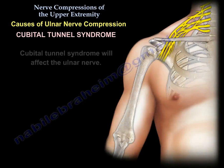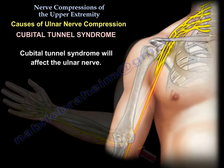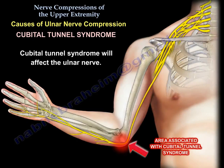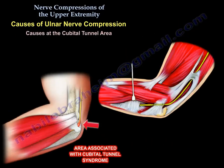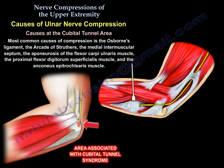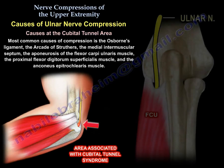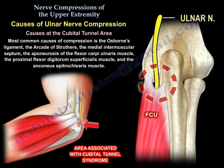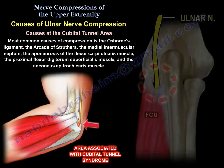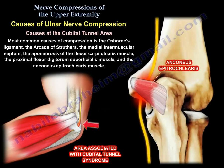Causes of ulnar nerve compression at the ulnar tunnel area: the most common cause is the arcade of Struthers, the medial intermuscular septum, the Osborne ligament, the aponeurosis of the flexor carpi ulnaris, the proximal flexor digitorum superficialis, and the anconeus epitrochlearis.